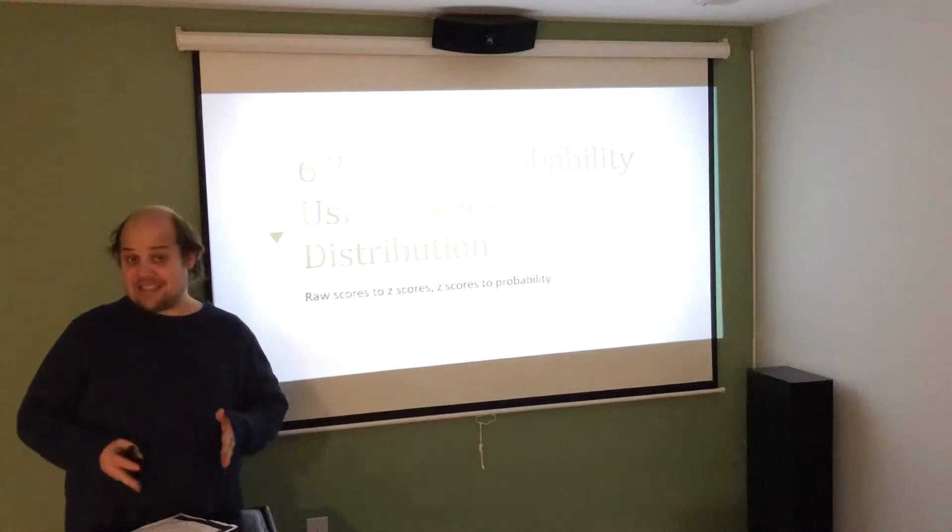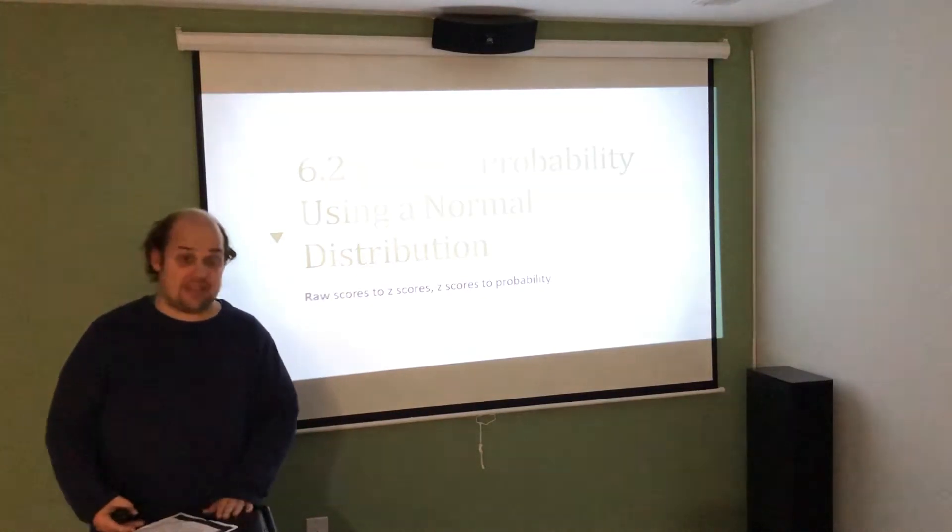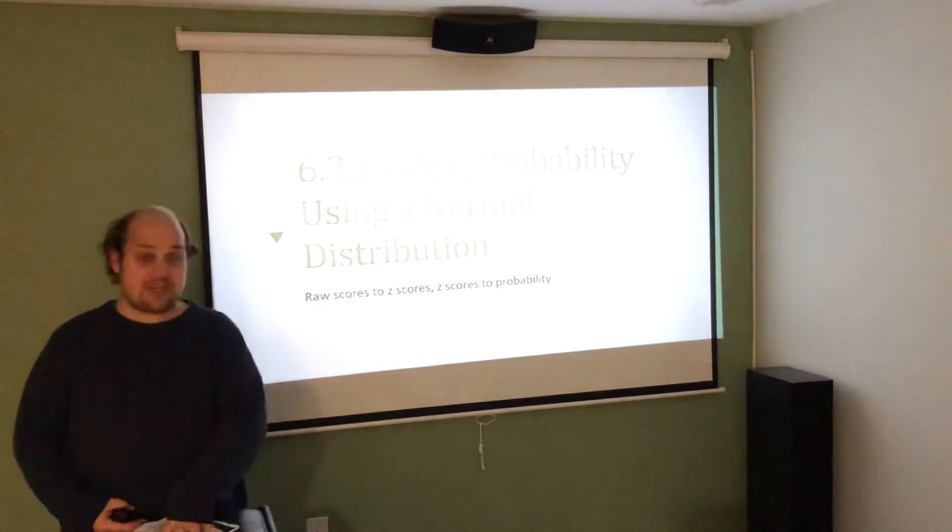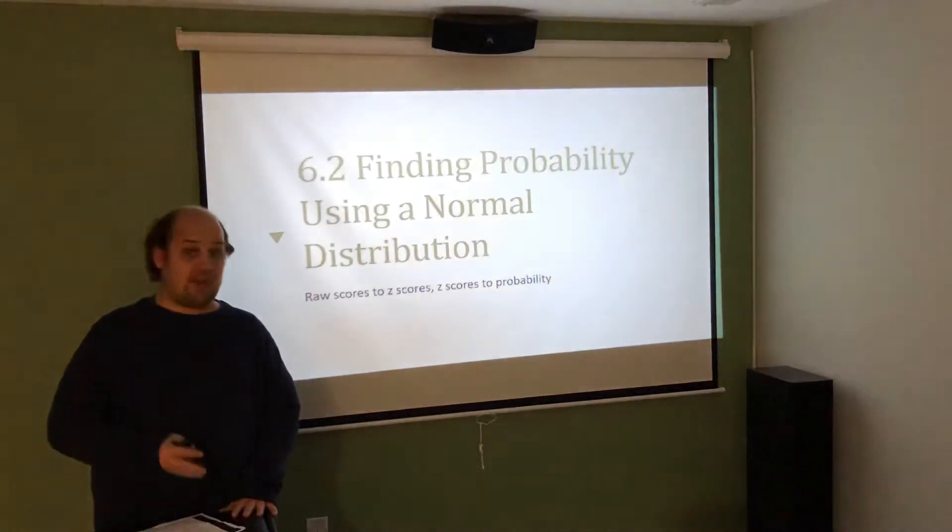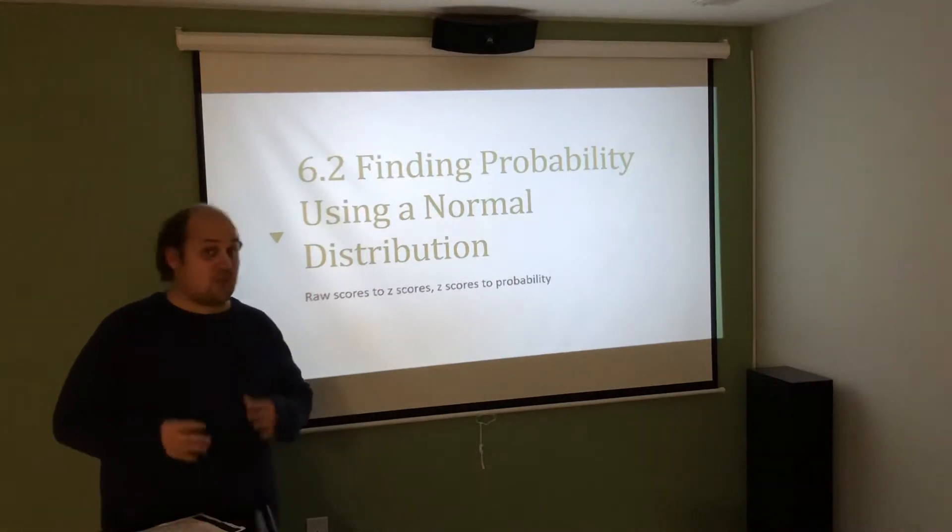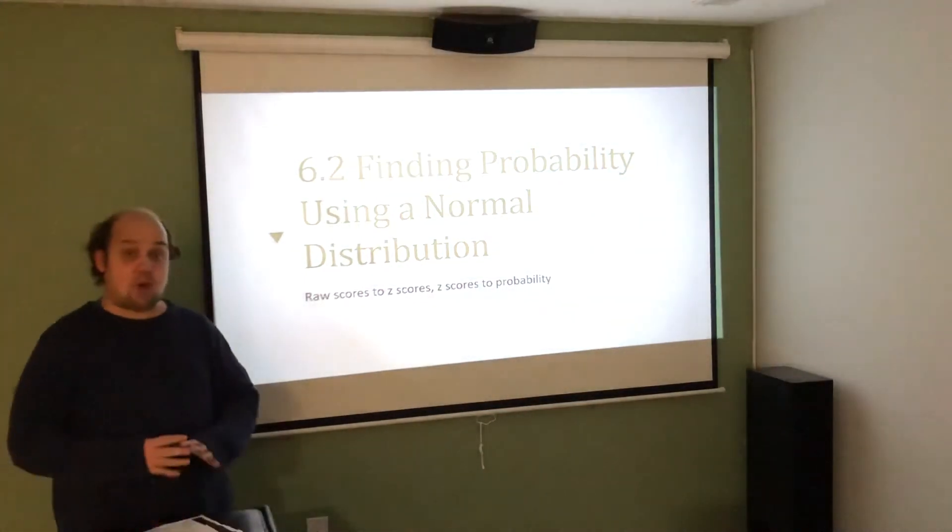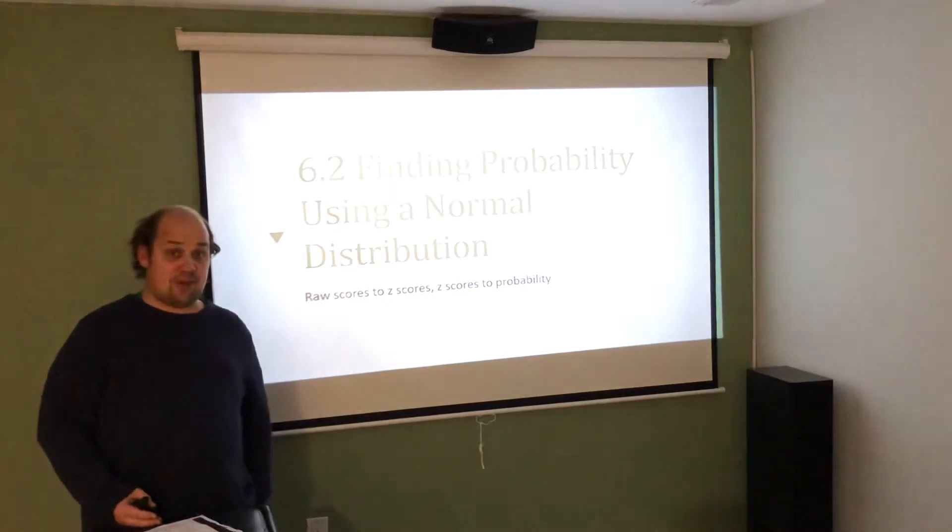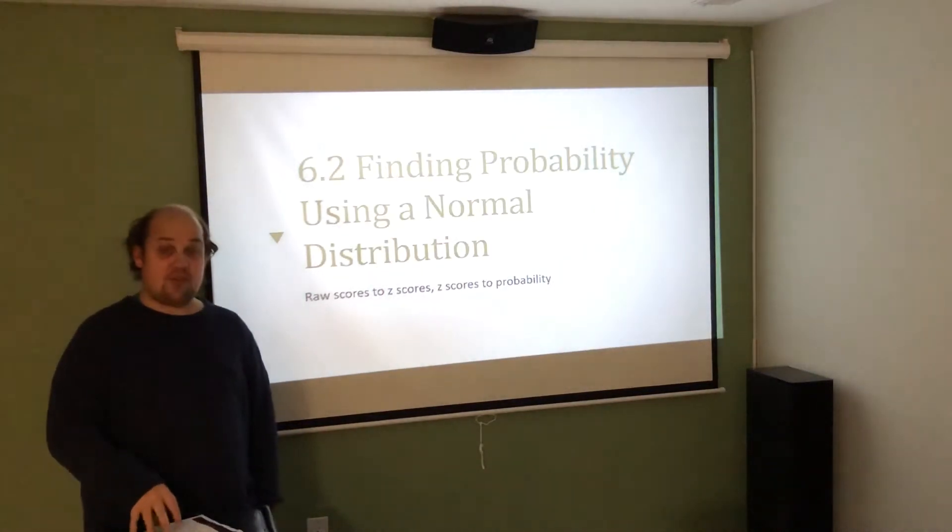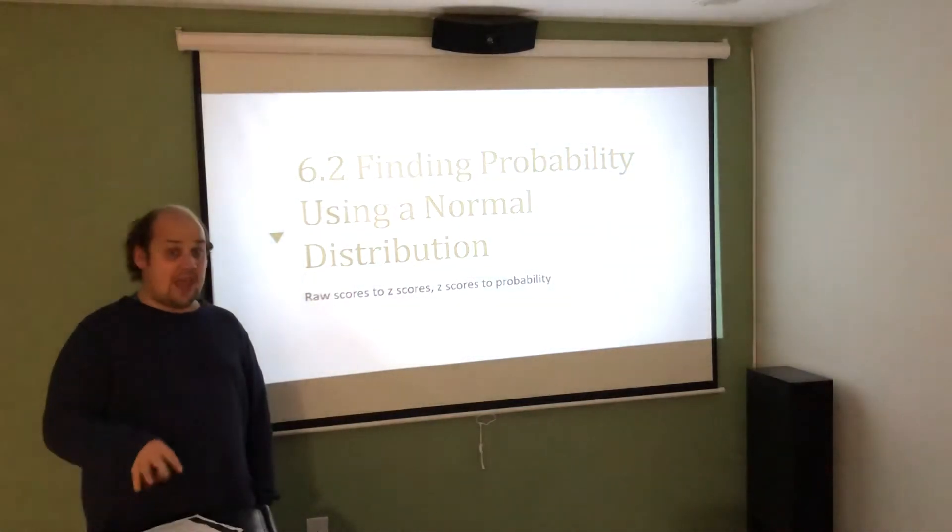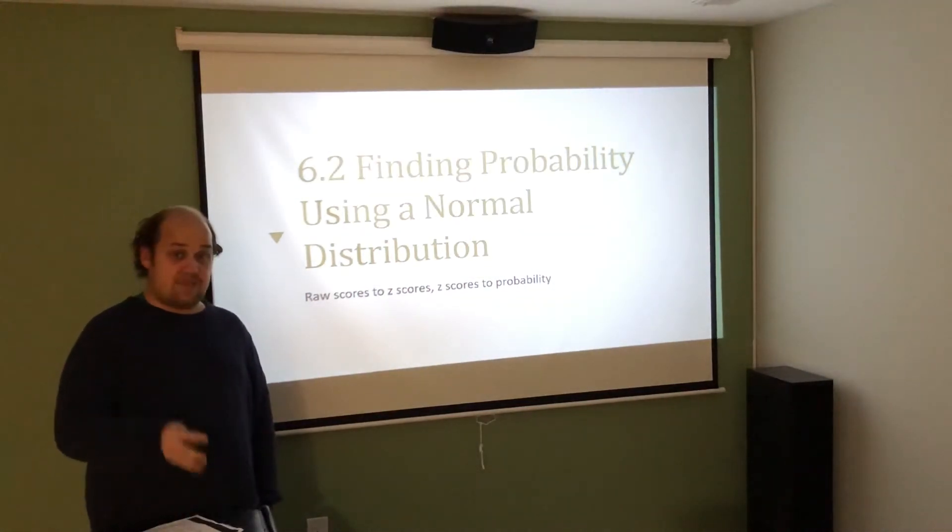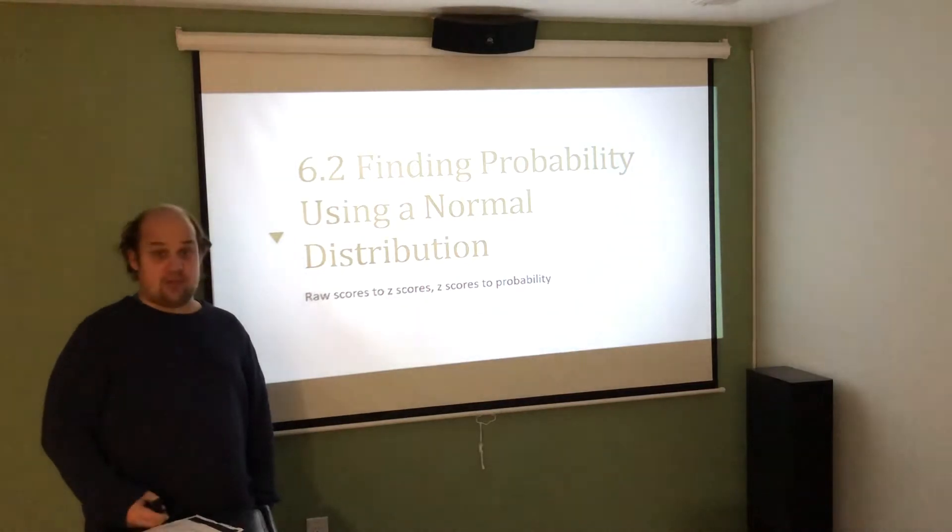Once we've got the z-scores and are able to translate them to the table, we can find probabilities from the table. But then the table values we'll have to manipulate based on whether it's a greater than question, less than question, or a between question. So there's a lot of moving parts here. It's why I break this lecture into three parts, because it's really important that you understand what's going on with the normal distribution for everything to come. And I really want to focus on the specific skills that come with the normal distribution.